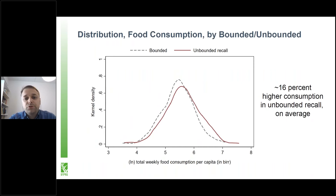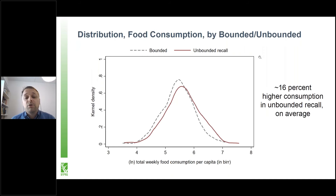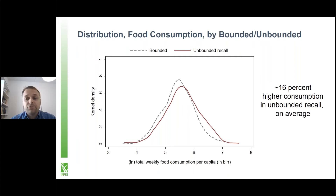Looking at the distribution of total weekly food consumption, we see that the unbounded recall group reports larger consumption values across the board. On average, the unbounded recall group reports 16 percent higher food consumption relative to the bounded recall group. If you think about a seven-day recall period, this is approximately equivalent to adding one full extra day of consumption into the weekly total.